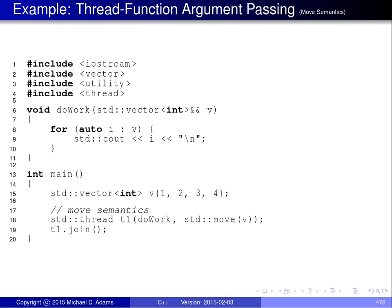The example on this slide is very similar to the previous one. The only real difference is that instead of using std::ref, we're using std::move to pass v by moving rather than copying. This might be desirable if v were a very large vector, since moving is much cheaper than copying. Otherwise this example is very similar to the previous one.